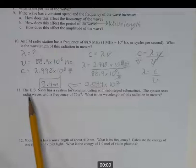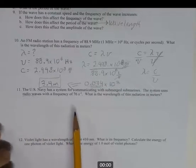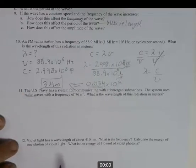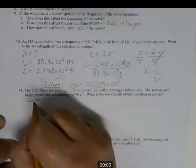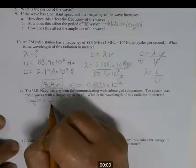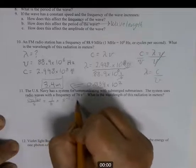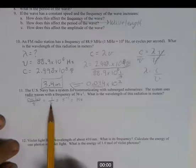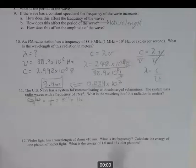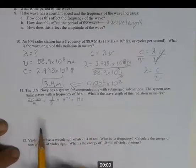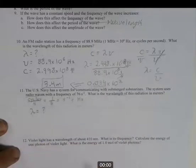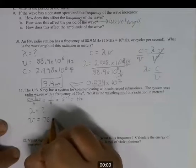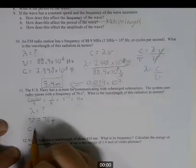Number 11: the U.S. Navy communicates with submerged submarines using radio waves — an electromagnetic wave — meaning it moves at the speed of light, 3 times 10 to the 8th meters per second, with a frequency of 76 hertz. Frequency can be written as cycles per second, 1/seconds, seconds to the minus one, or hertz — they all mean the same thing.